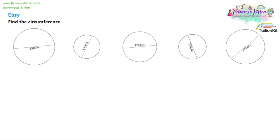We're gonna find the circumference of circles, and by circumference we just mean the line around the outside of a circle. You could imagine it as the perimeter of a circle. The formula is that the circumference, which we can call C, is equal to pi multiplied by the diameter of the circle.